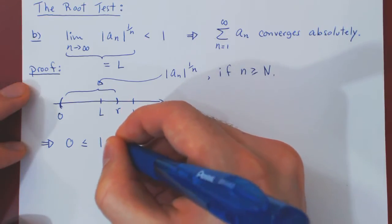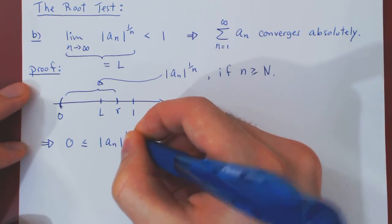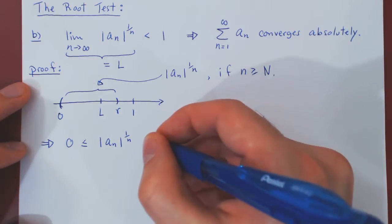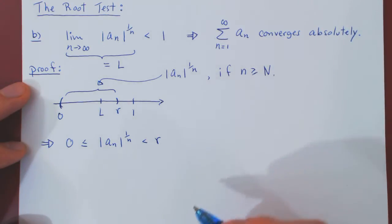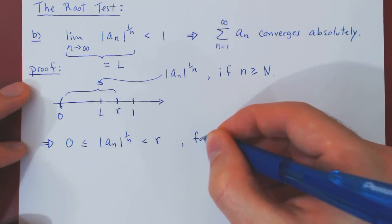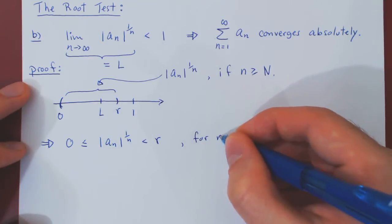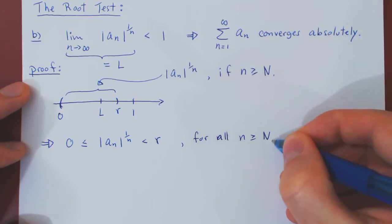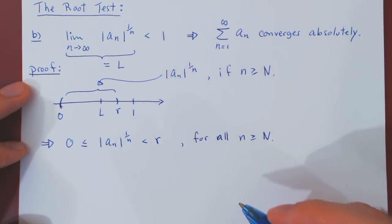Let's now rewrite this in terms of inequalities. So this means that |a_n|^(1/n) will be between 0 and R, for all values of lowercase n larger than our arbitrary positive integer N.